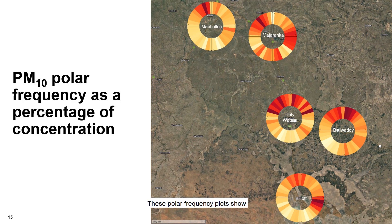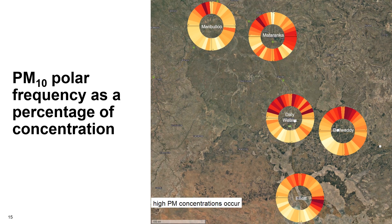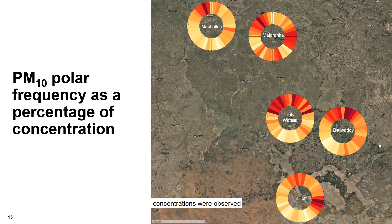These polar frequency plots show the mean contribution of PM10 for each wind direction and allow the worst-case direction for dust contribution to be identified. For example, at Manbaloo, high PM concentrations occur during North Westerlies, while at Mataranka, there are a high range of wind directions for which high PM10 concentrations were observed.